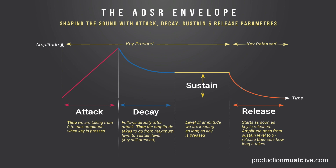Pad sounds, for example, have a higher sustain level, have a bit of attack, and they have release because they're more smooth. So take a look at this graphic — maybe print it out, hang it on your wall. Keep in mind: attack is the time we are taking from zero to maximum amplitude when the key is pressed. Decay time follows directly after the attack — it's the time the amplitude takes to go from maximum level to sustain level, still pressing the key. And then we have our sustain level, which is the level of amplitude we are keeping as long as the key is pressed.